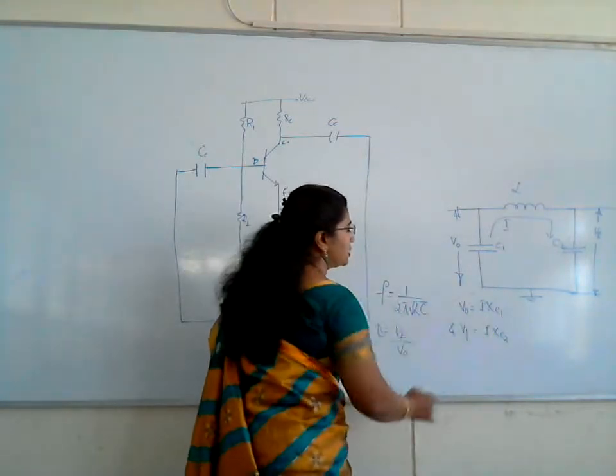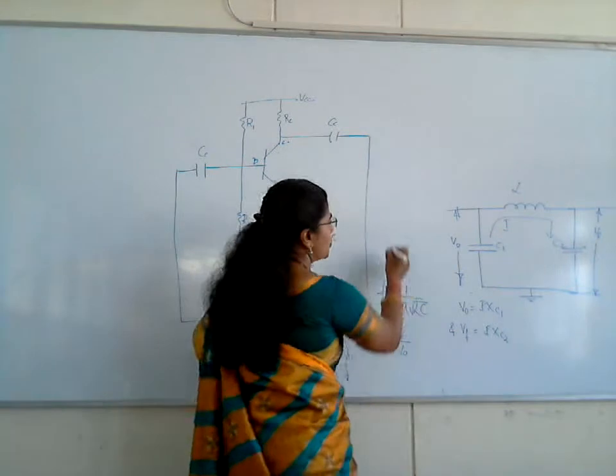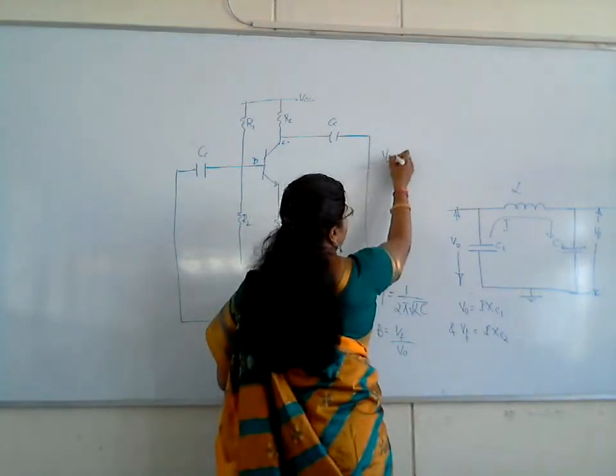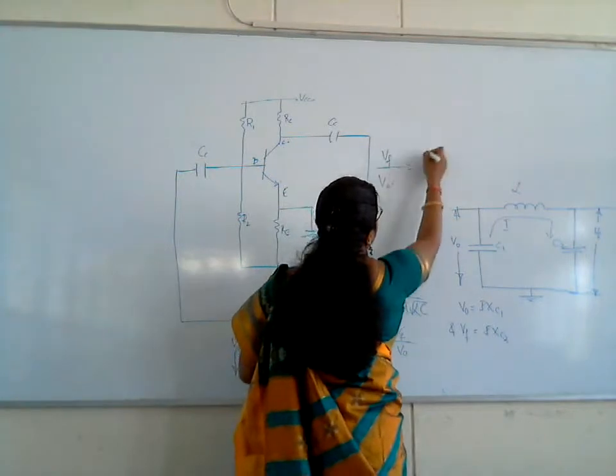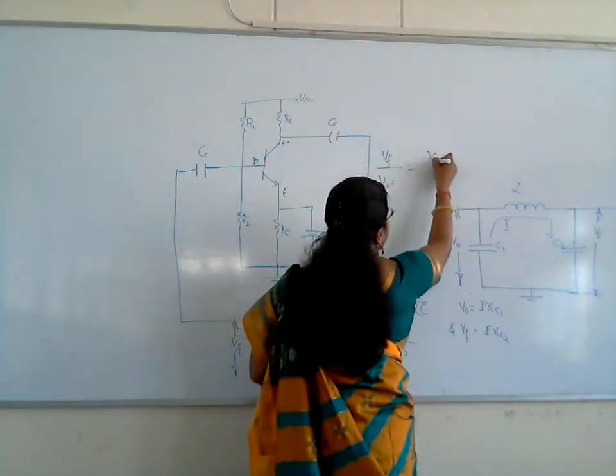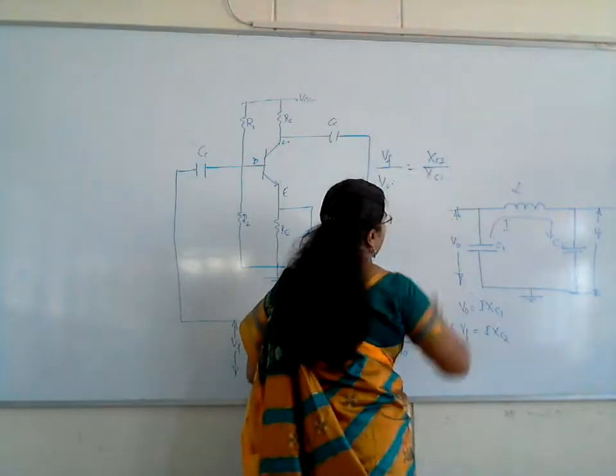In Vf by V0, the I terms get cancelled. So what we get is Vf by V0 is equal to Xc2 divided by Xc1.